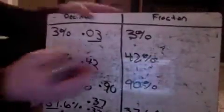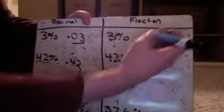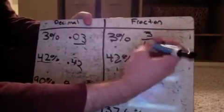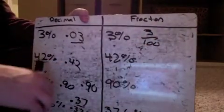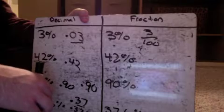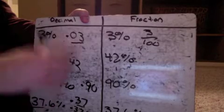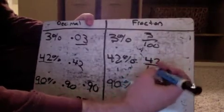Now, if we go over to the fraction side, 3% is the same thing as 3 over 100, that cannot be reduced. So 3 over 100 is all we can do.